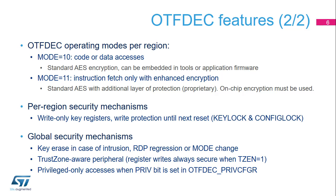The configuration of each region can be independently locked to prevent any further modification. Both the 128-bit key and the configuration parameters can be locked. All key registers are write-only and are automatically erased in case of intrusion detected by tampers, readout protection regression, or mode field change. OTF-DEC is a TrustZone-aware peripheral. All access rights to its registers must be secure when security is activated in the product, when TZEN equals 1. When PrivBit is set in OTF-DEC PrivCFGR, only privileged accesses are granted to most OTF-DEC registers.